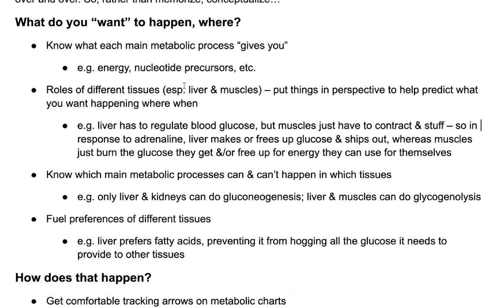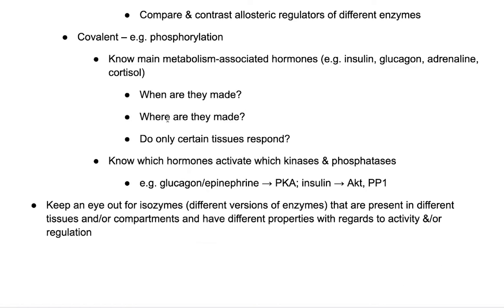Know the main metabolism-associated hormones — insulin and glucagon are the two big ones that regulate your liver. Know when they're made, where they're made, and whether only certain tissues respond. For example, only your liver is going to respond to glucagon and not your muscles, whereas both respond to adrenaline. But thinking back to what we'd want to happen where — your liver and your muscles are going to respond differently to that adrenaline because they have different functions.